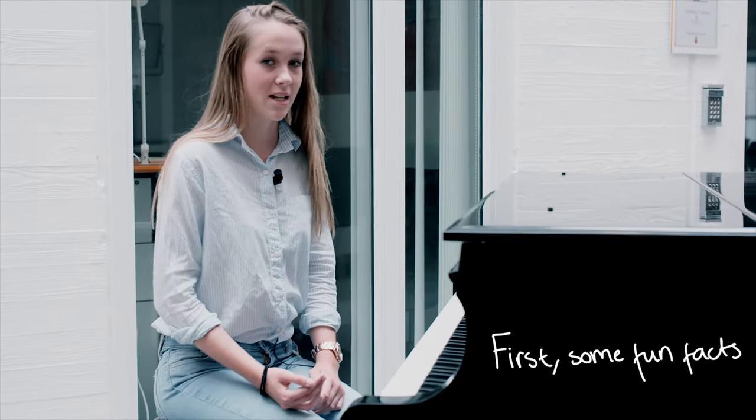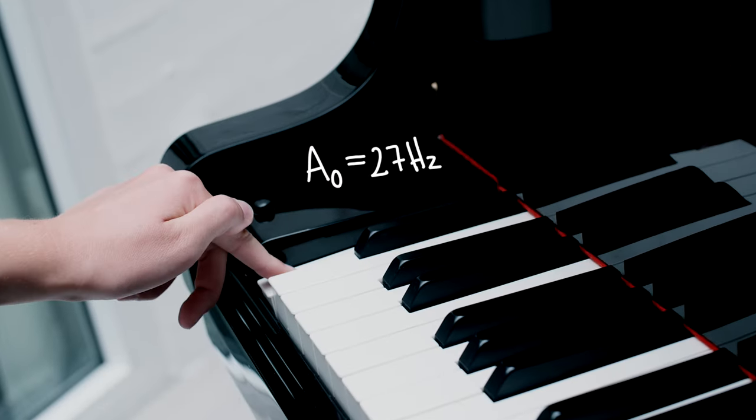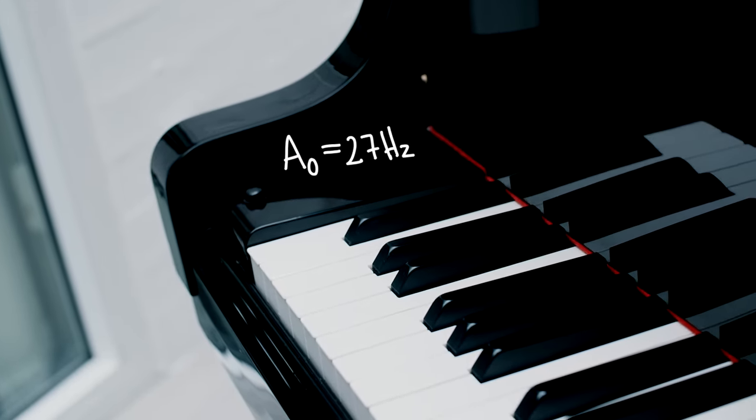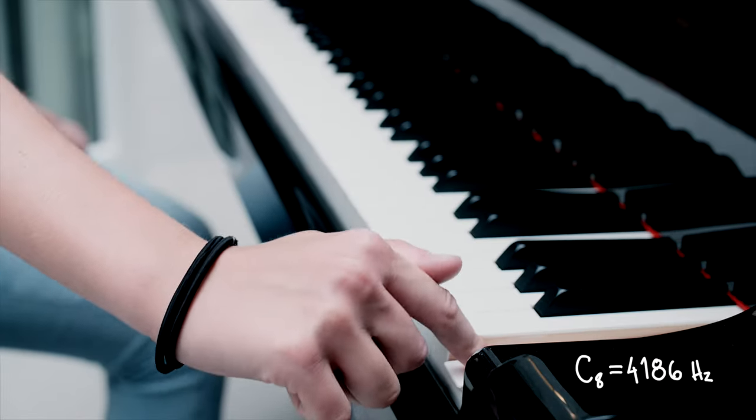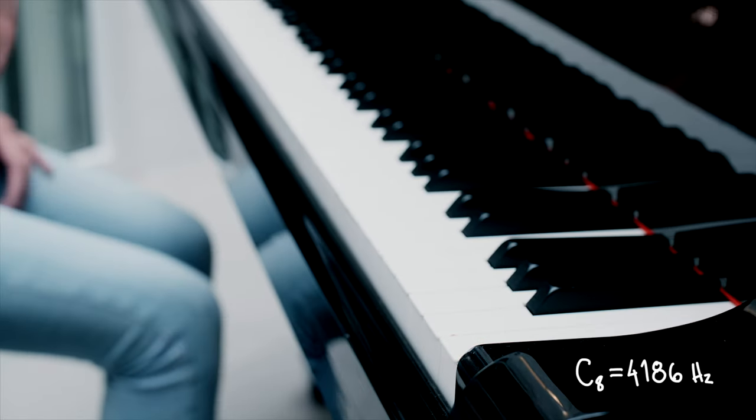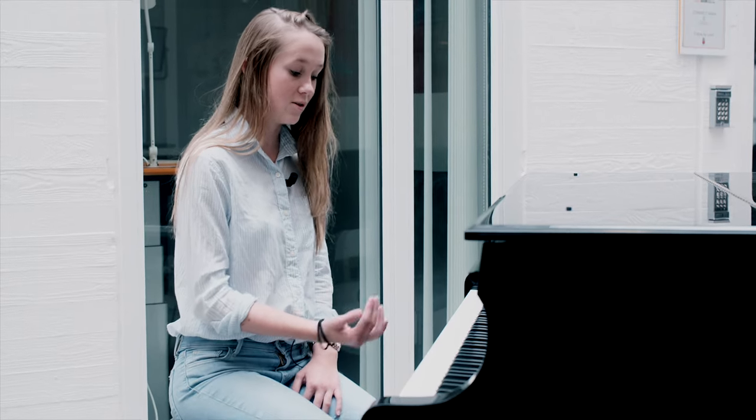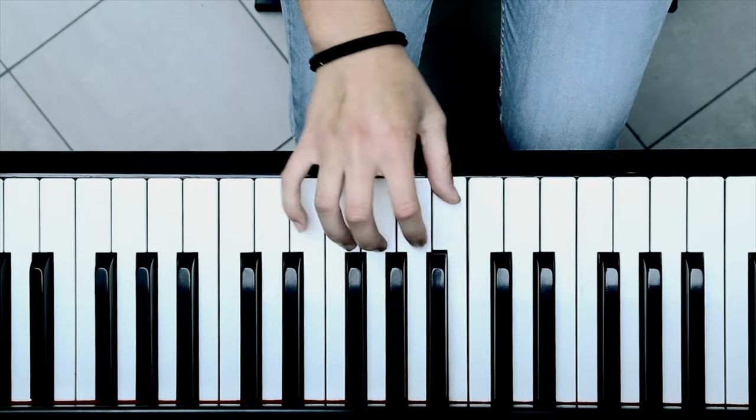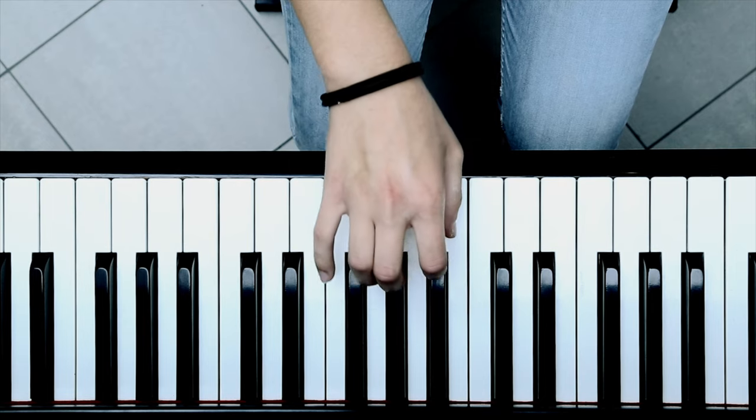The piano has 88 keys, 7 octaves and a frequency spectrum from A0 which has 27 Hz and C8 which has 4186 Hz. And you may wonder what an octave is. Well, an octave includes 8 semitones from C to C or F to F.